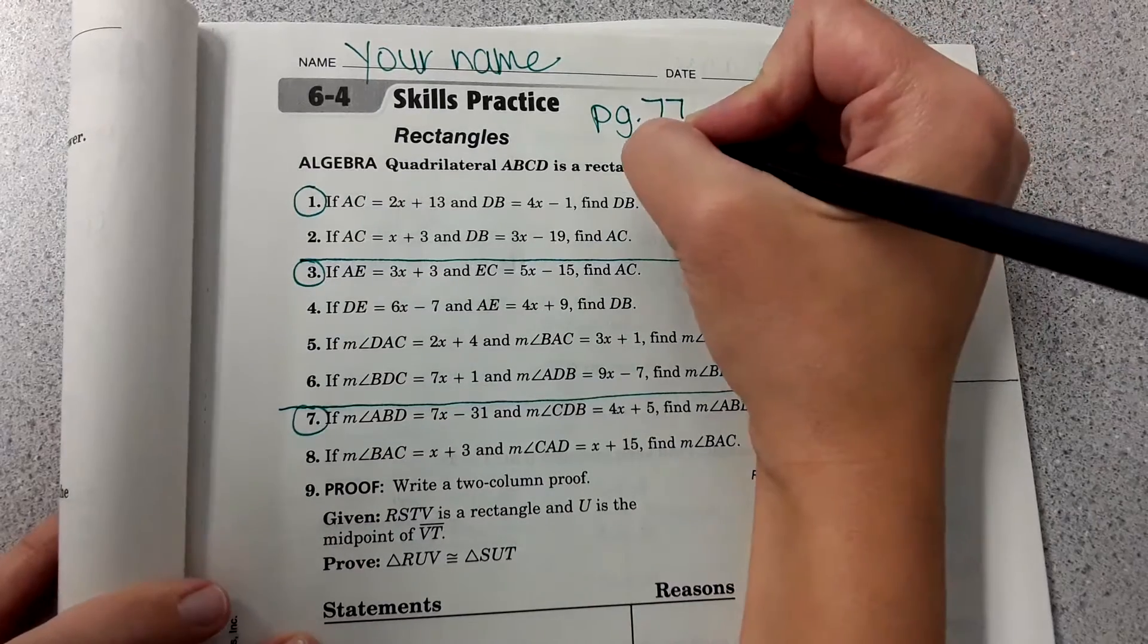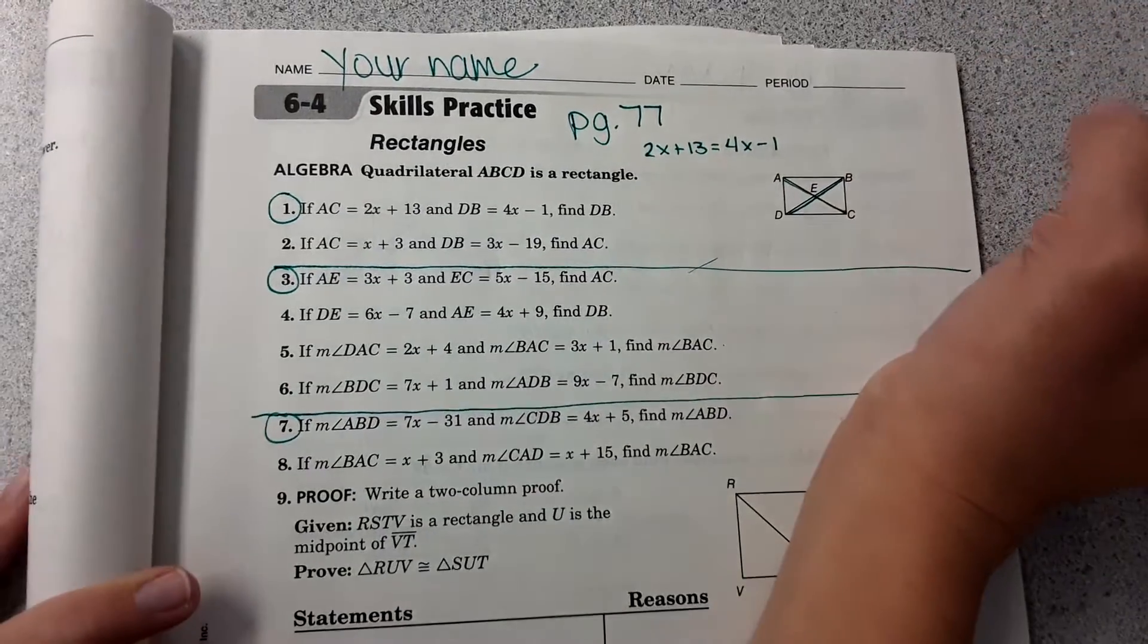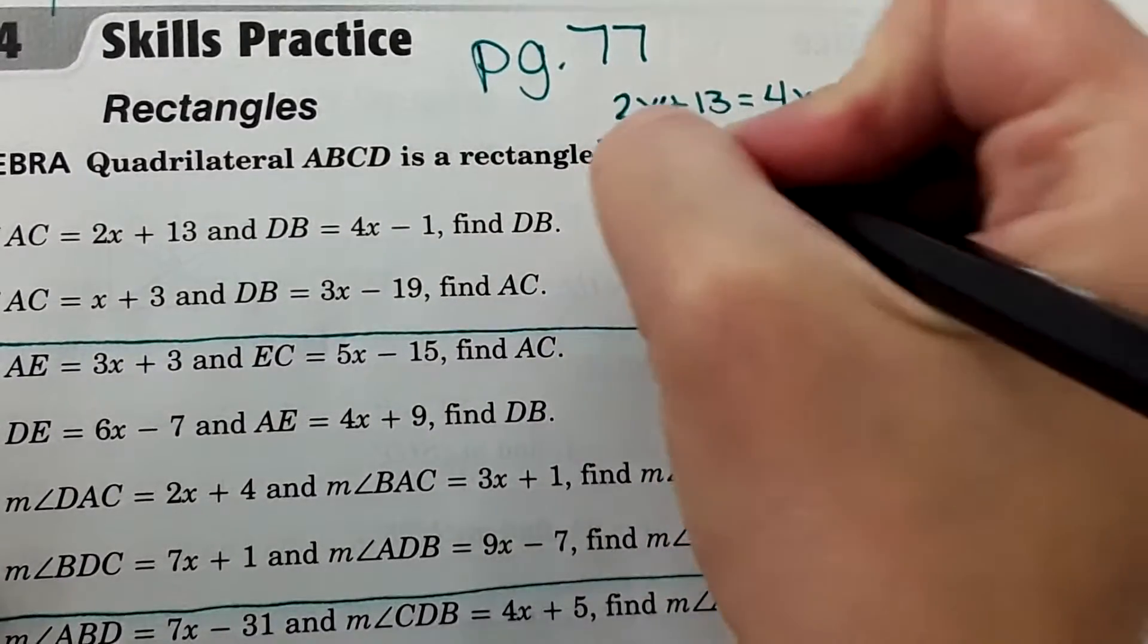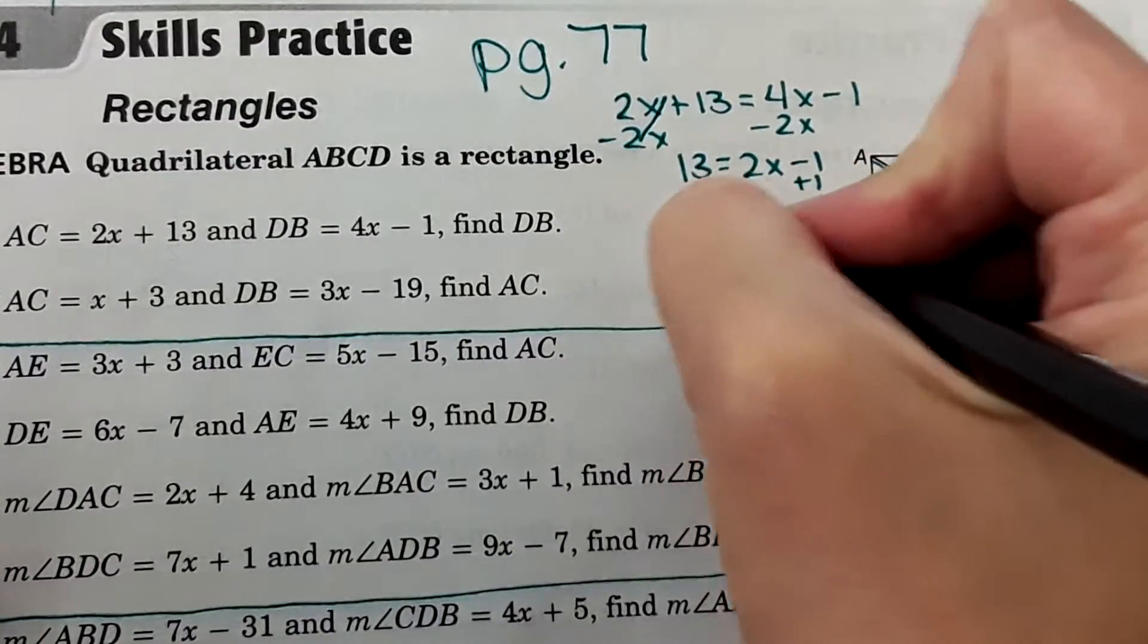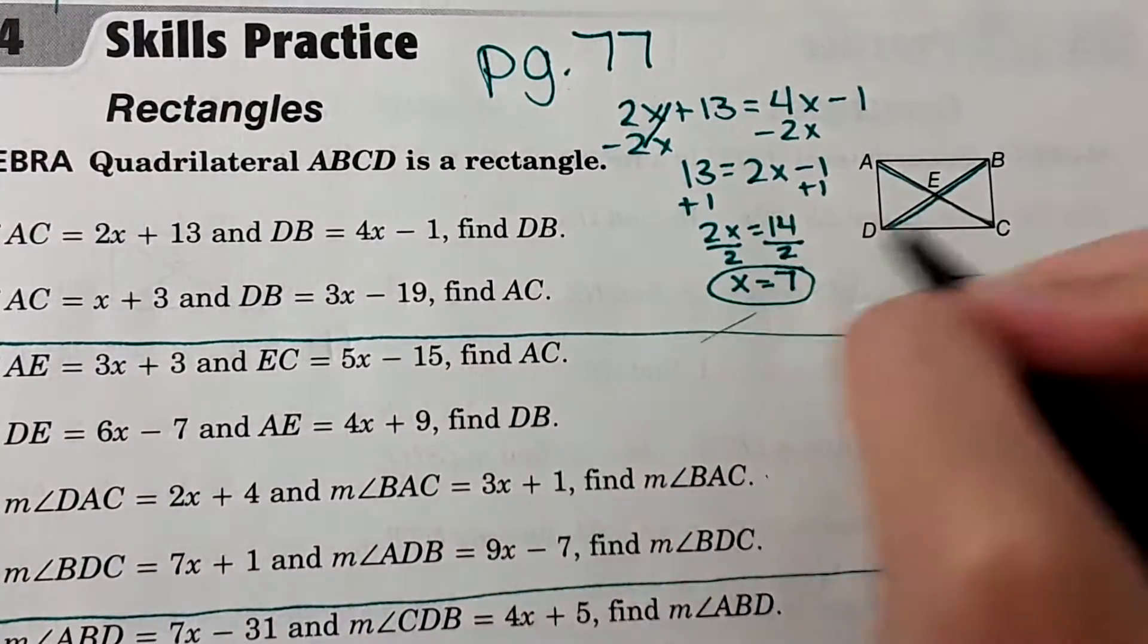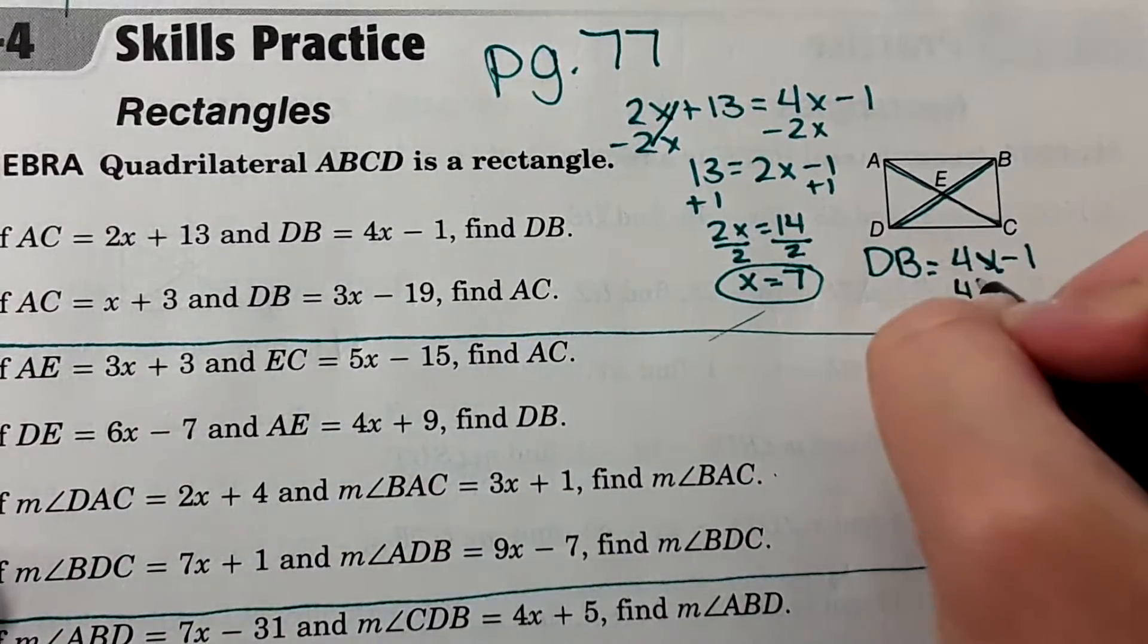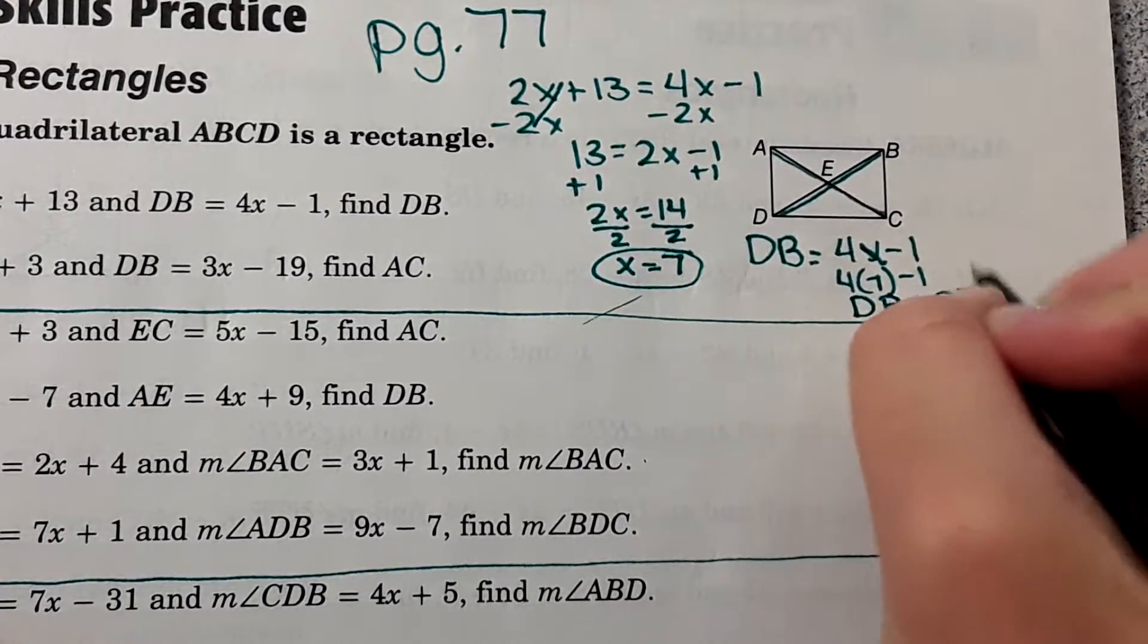I'm going to start up here just to give myself a little bit more room. So 2x plus 13 equals 4x minus 1, and then I'm going to go through and solve for x. Let me zoom in a little bit here too. Okay, so now I'm just solving for x. And I get x equals 7. However, it doesn't ask for what the variable equals, it asks for the length of DB. So now I'm going to take the expression for DB, which was 4x minus 1, and plug in x equals 7. So 4 times 7 minus 1 gives me 28 minus 1, so 27. So the length of DB equals 27 units.